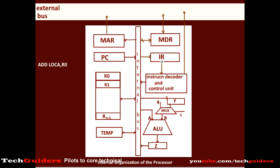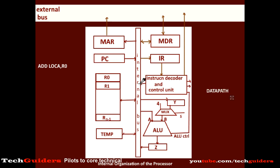So the instruction is fetched, decoded, and executed, and by that time the content of the program counter is incremented. Hence the next instruction, whose address is now in the program counter, can be fetched, decoded, and executed. We can see that the execution of this one instruction — ADD location A, R0 — at the lowest level is actually a series of data transfers between registers or between registers and the ALU.